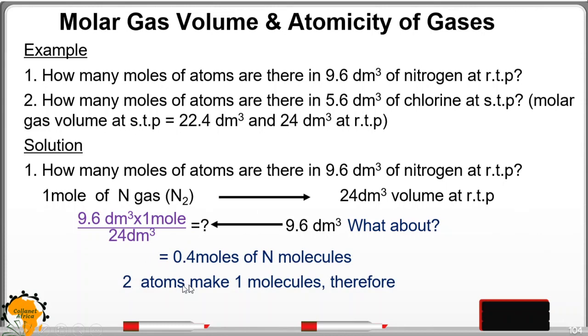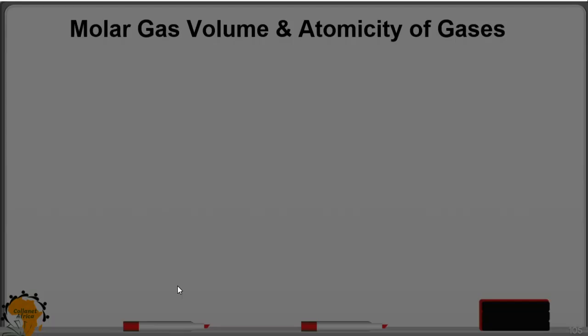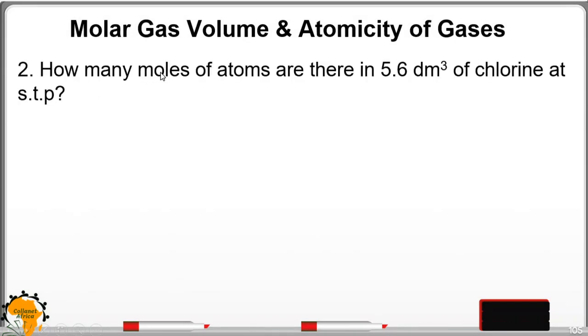Two atoms make one molecule. Therefore, because the question was asking about the atoms, we convert the number of moles now into atoms. There will be 0.8 moles of nitrogen atoms because these are 0.4 moles of nitrogen molecules. Hence, you multiply by 2 to get 0.8 moles of nitrogen atoms present.